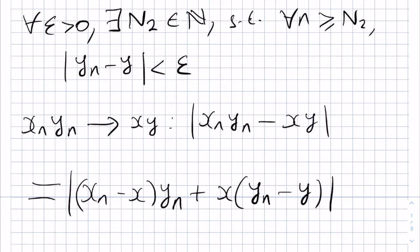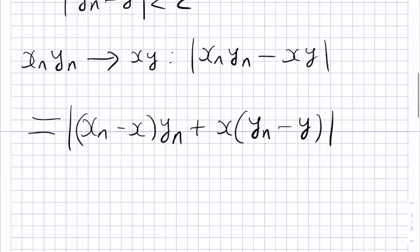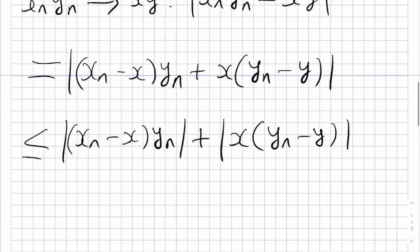Next, the triangle inequality allows us to split this up as an inequality. This is less than or equal to the modulus of Xn minus X times by Yn plus the modulus of X times by Yn minus Y, using the triangle inequality.